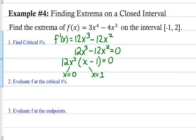Step 2, evaluate f at the critical numbers. Plug in x = 0: 3(0⁴) - 4(0³) = 0 - 0 = 0. Plug in x = 1: 3(1⁴) - 4(1³) = 3 - 4 = -1.